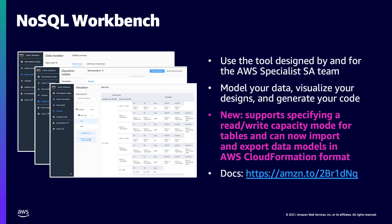The core steps are: first, understand the use case; second, model the relationships between entities in a diagram — I'm talking Visio or DrawIO diagrams; third, create a list of queries based on your access patterns; and fourth, design your schema for DynamoDB. It's this last step where NoSQL Workbench shines. The tool has three different sections that you move forward through as your design progresses.